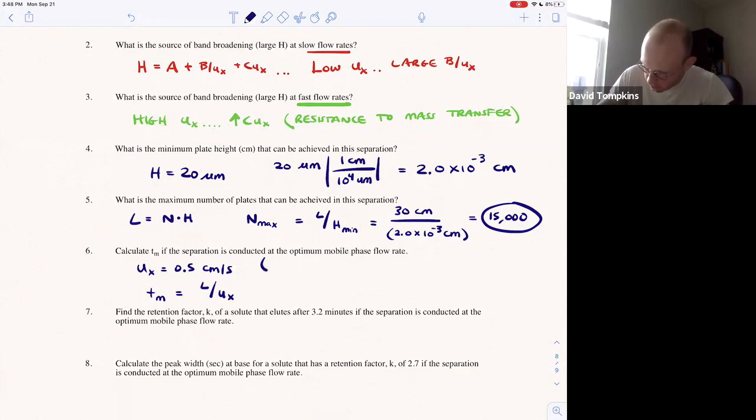Right? So TM is for unretained solute, where the time spent in the stationary phase or the retention time adjusted is zero.